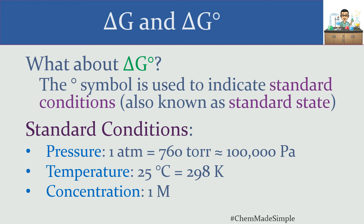Standard conditions are: a pressure of 1 atm — essentially the pressure at sea level, equivalent to 760 Torr and about 100,000 pascals in SI units; a temperature of 25°C, which is approximately 298 Kelvin; and possibly most importantly, a concentration of 1 molar for everything, whether on the reactant side or the product side. All of those concentrations have to be at 1 molar. In order for us to measure delta G naught, all of those conditions have to be true.